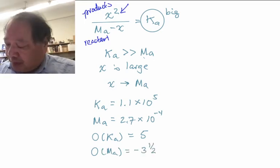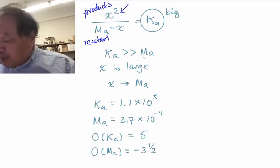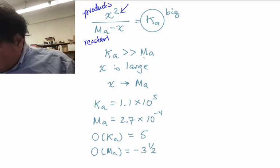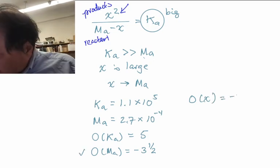The order of magnitude of Ma, as it's 2.7 times 10 to the minus fourth, is minus three and a half, so much much smaller. In this scenario therefore we should have a lot of product; X should approach Ma, which means we think that the order of magnitude of X will be the same as that of Ma. It's going to be minus three and a half.